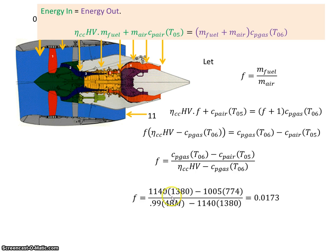Alright, so when I plug in the numbers, Cp of gas is 1140 joules per kilogram, Cp of air is 1005 joules per kilogram, the temperature at station 6 is 1380, and the temperature at station 5 is 774. The efficiency of the combustion cam is 99%, the heating value of fuel is 48 megajoules per kilogram, and these are just repeated. So when I plug those in, I get a value of 0.0173.